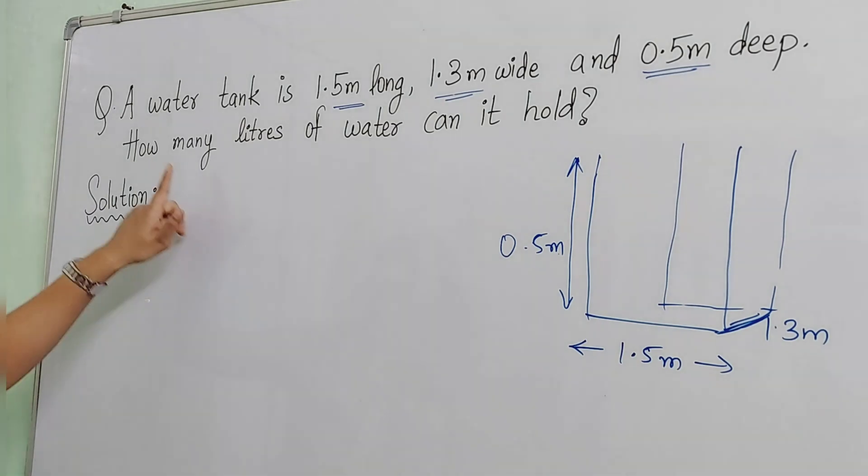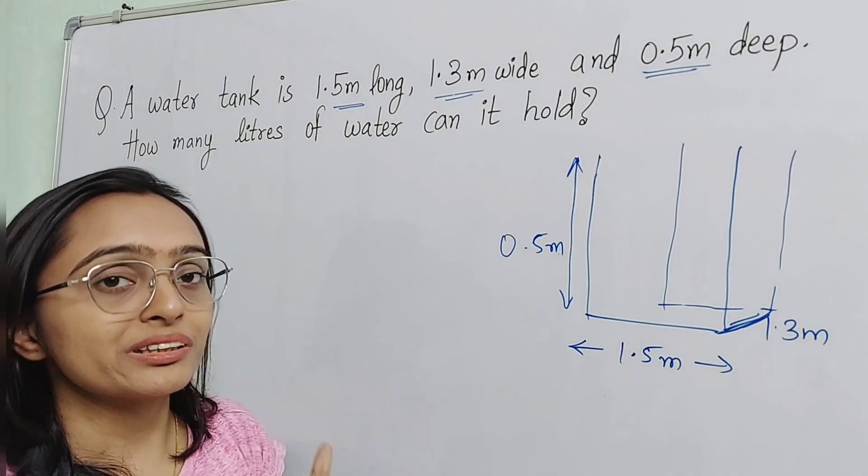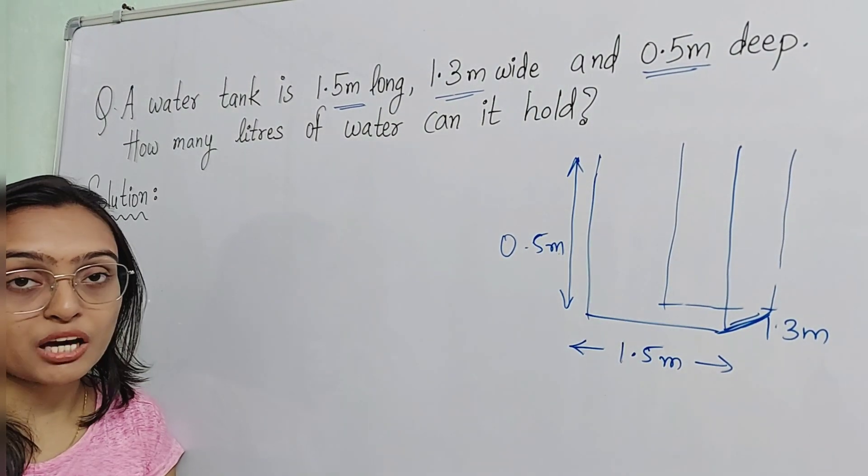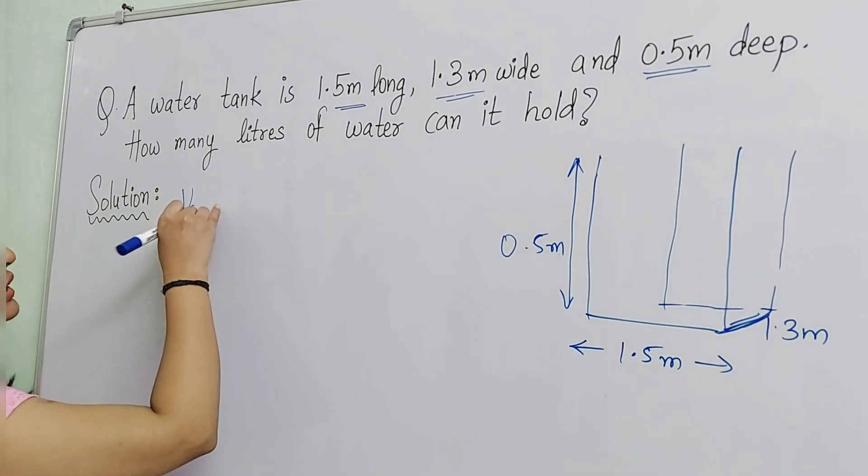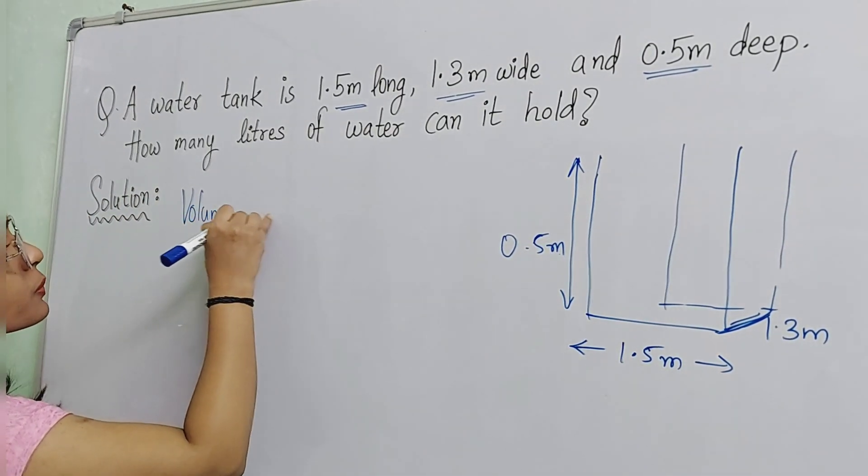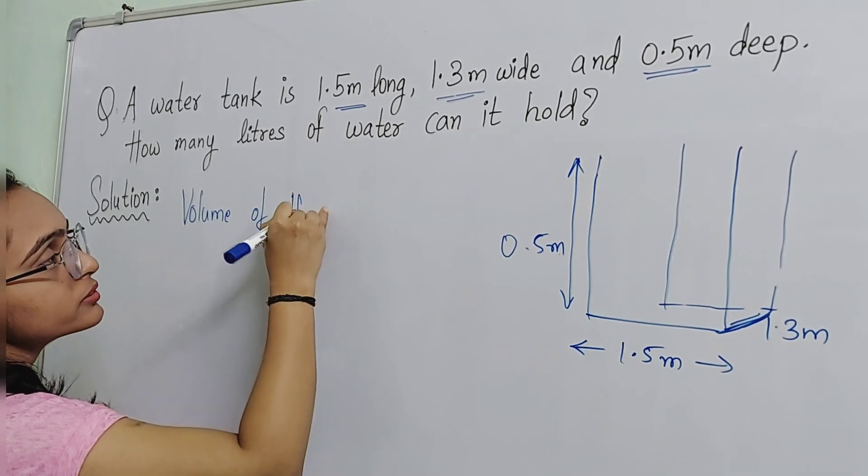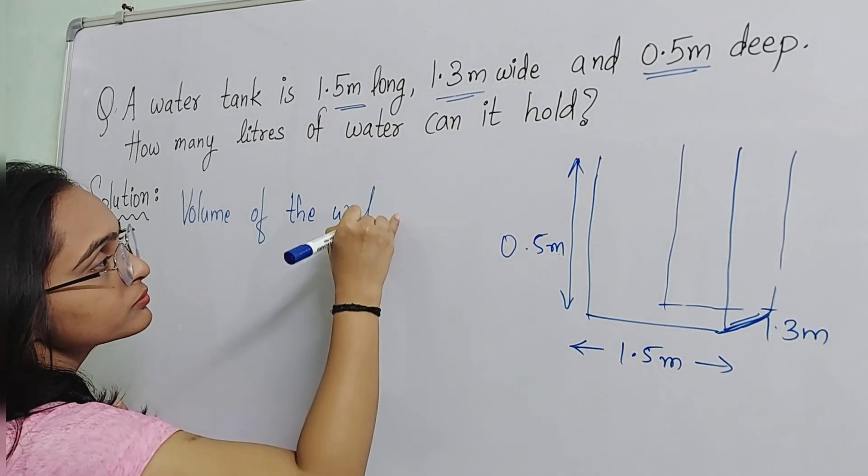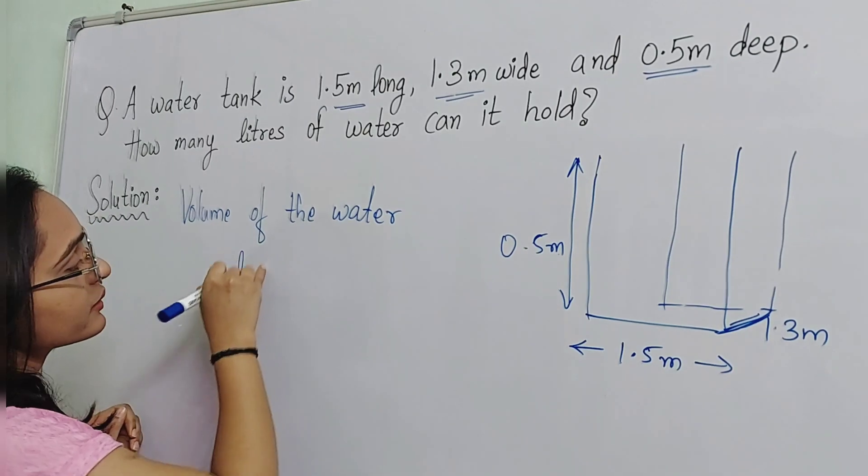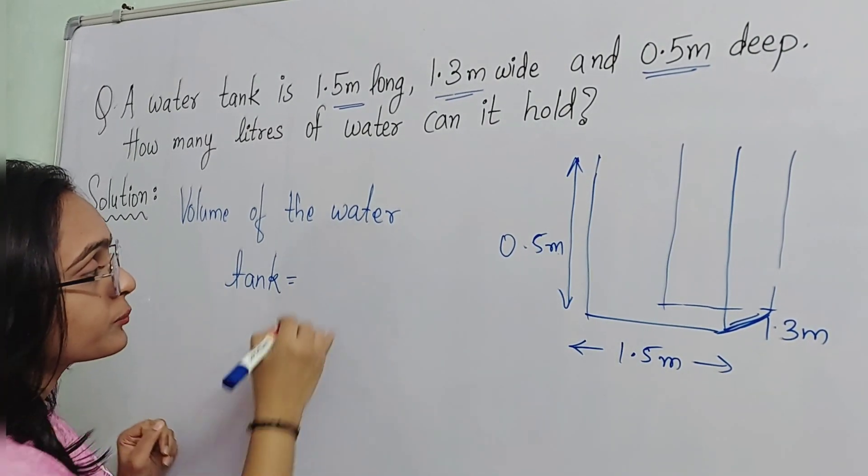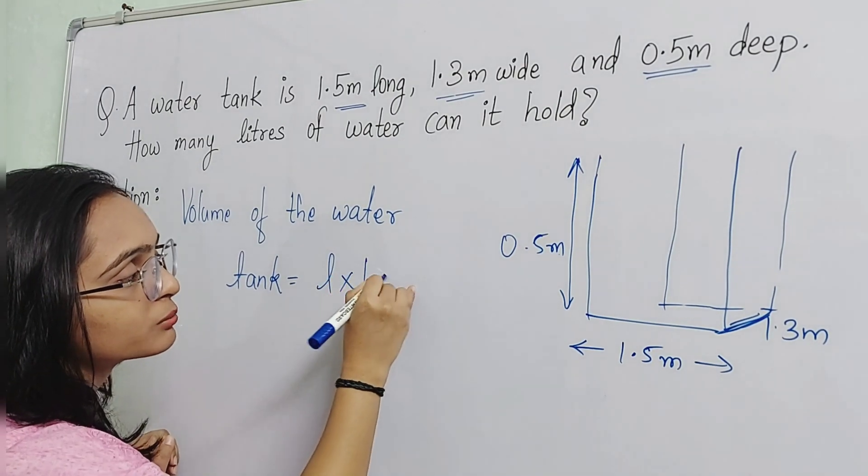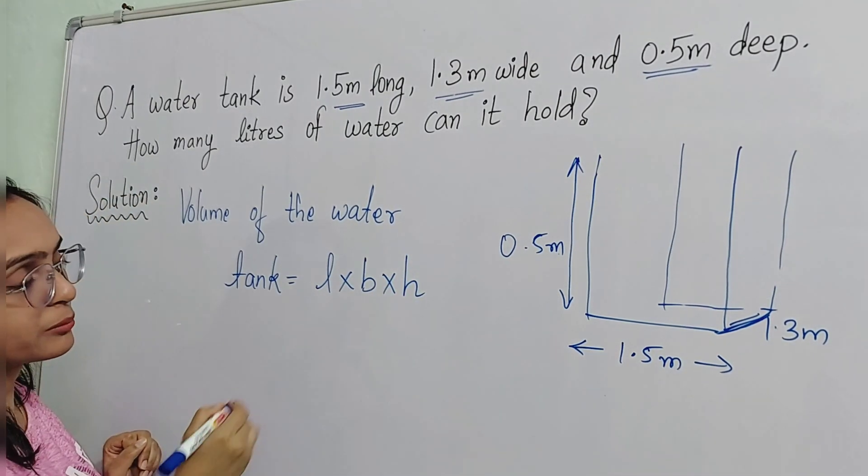Then you have to calculate how many liters of water it can hold. So, here we can find capacity and capacity is always volume. So, we need to find volume of the water tank. Volume of water tank formula is LbH - length multiplied by breadth multiplied by height.